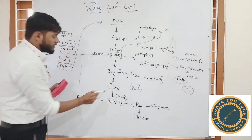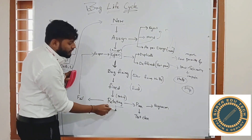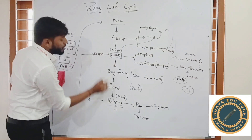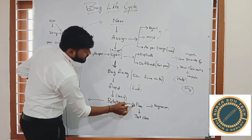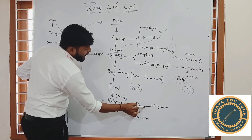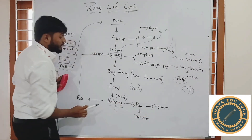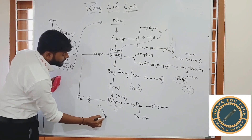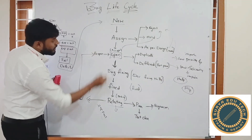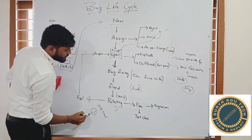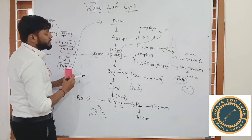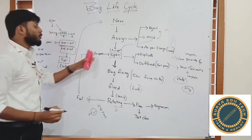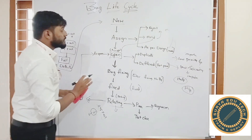The testing team then performs retesting — rechecking the same defect to verify whether the developer fixed it properly. If retesting passes, it enters the test cycle and they proceed with regression testing. If retesting fails, meaning the expectation still does not match the actual, the defect is sent again — but since it was already sent before, the status is now 'Reopen'. Reopen means the developer did not fix it properly.